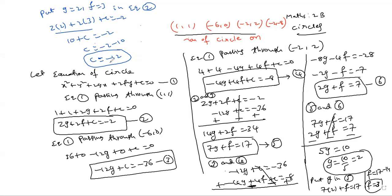Now substitute g = 2, f = 3, and c = -12 into equation 1. The circle equation becomes: x² + y² + 4x + 6y - 12 = 0. This equation passes through the first three points. Now we'll test the fourth point (-2,-8).